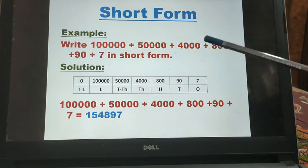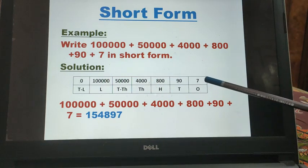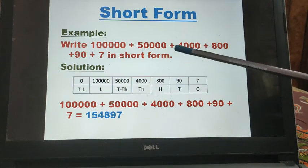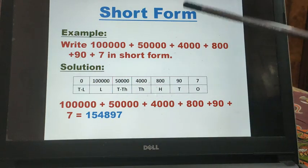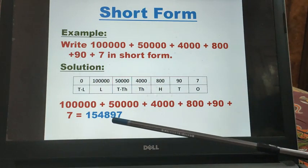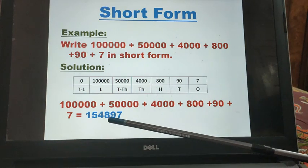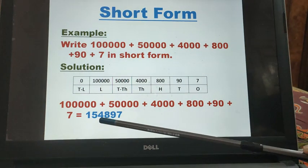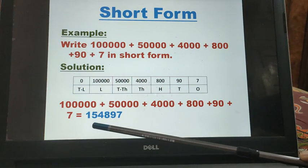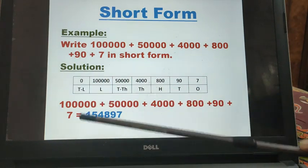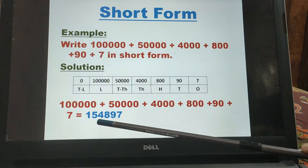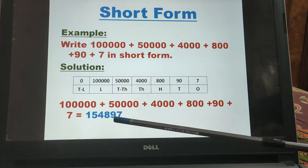Now when you have to write the number, you will start from 1 place. So the number will be 7, the position of 9 is 10, so the number is 9, then 100 place where the number is 8, on 1000 place the number is 4 and on 10,000 place it is 5 and on lakh place it is 1. So the number will be 154897.